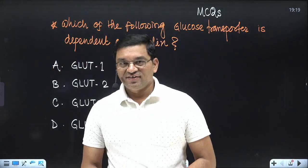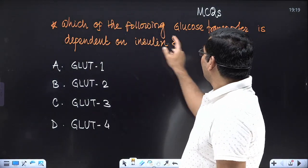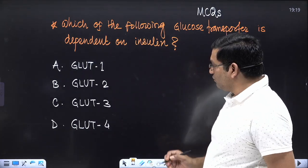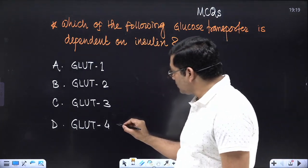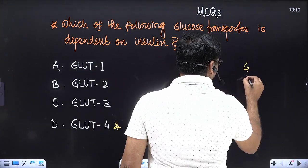Hello students, welcome to a discussion of one MCQ in one minute. Which of the following glucose transporter is dependent on insulin? What should be the answer here? Your answer is GLUT-4. GLUT-4, 8, and 12 are the insulin-dependent glucose transporters.